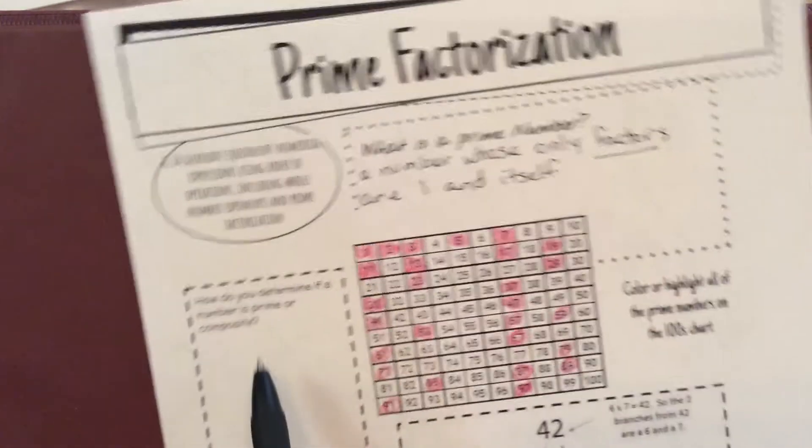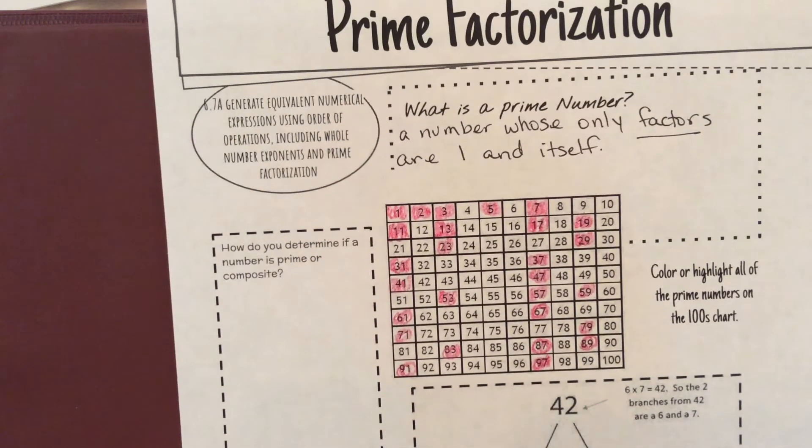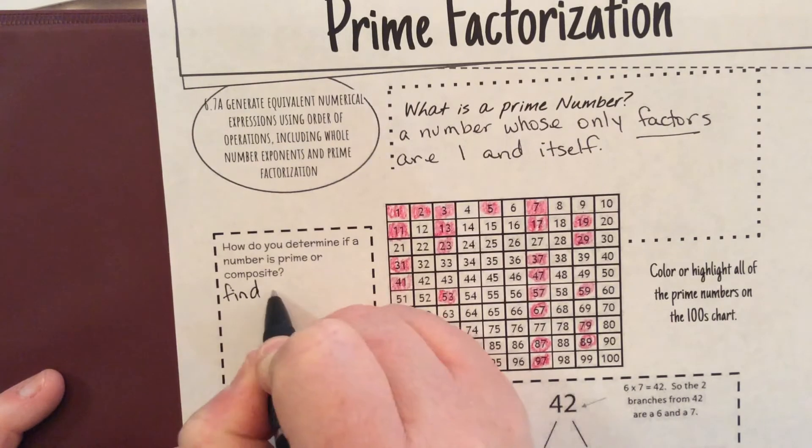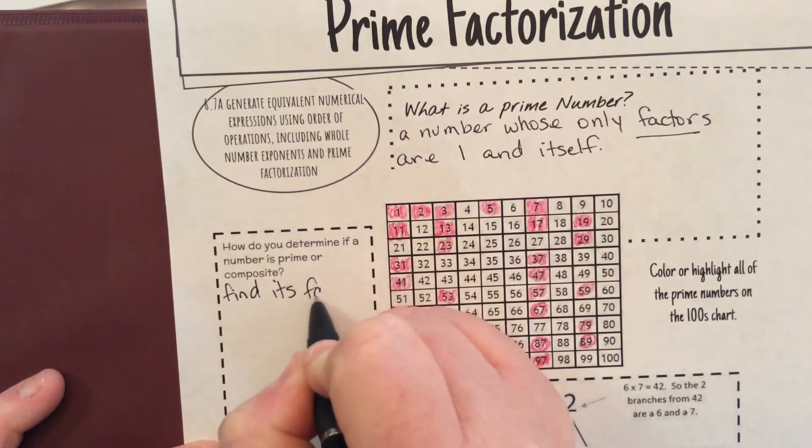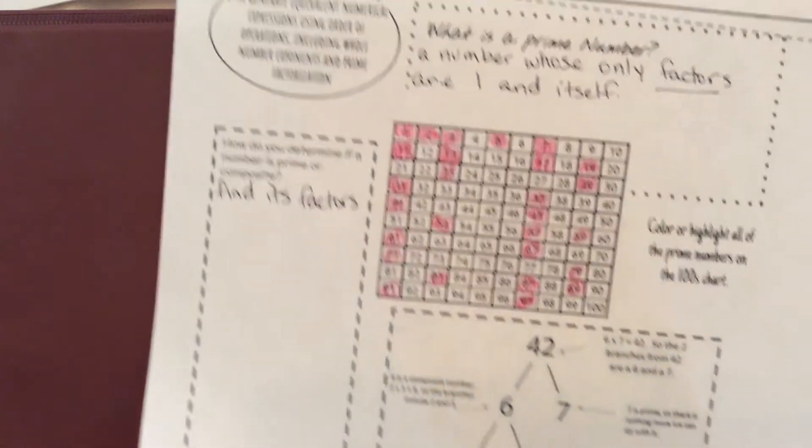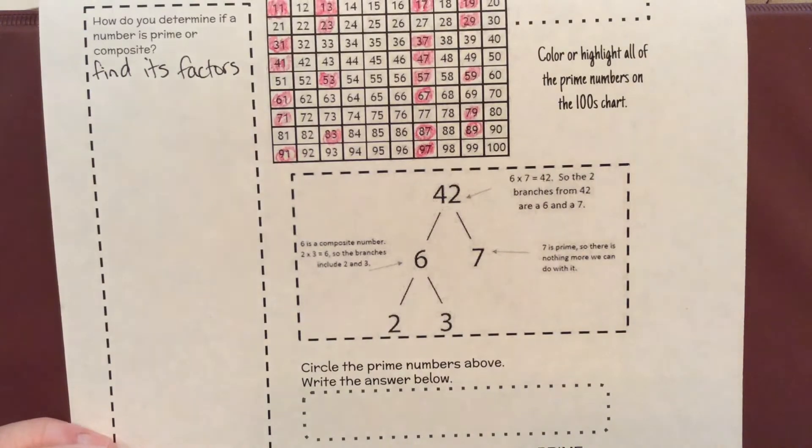All right, so how do you determine if a number is prime or composite? Well, we just need to find its factors. And what I mean by that is what numbers go into it. So this is something you learned in elementary about factor trees.